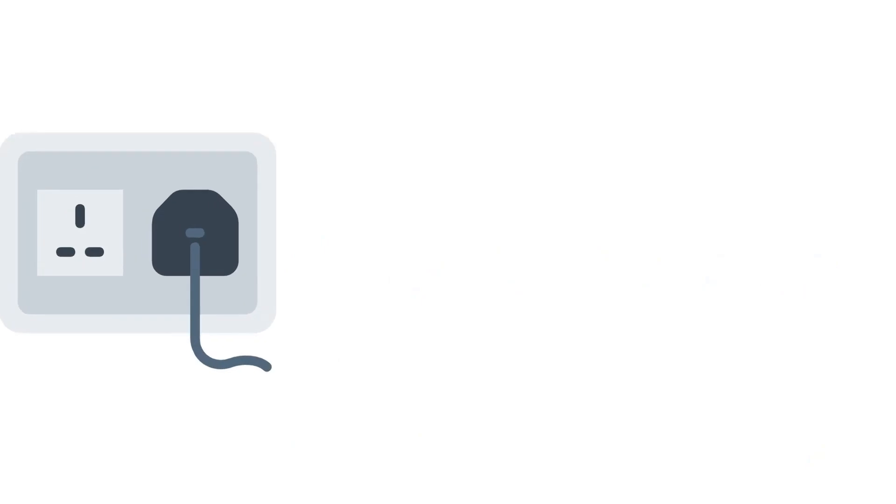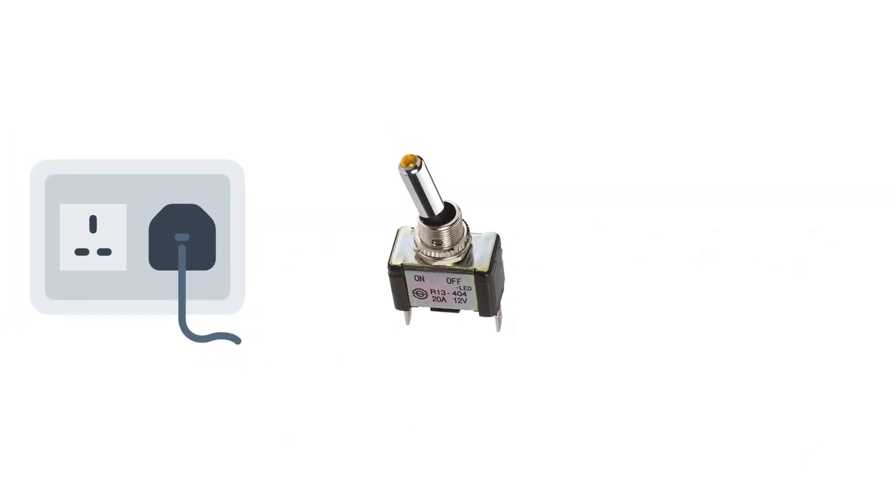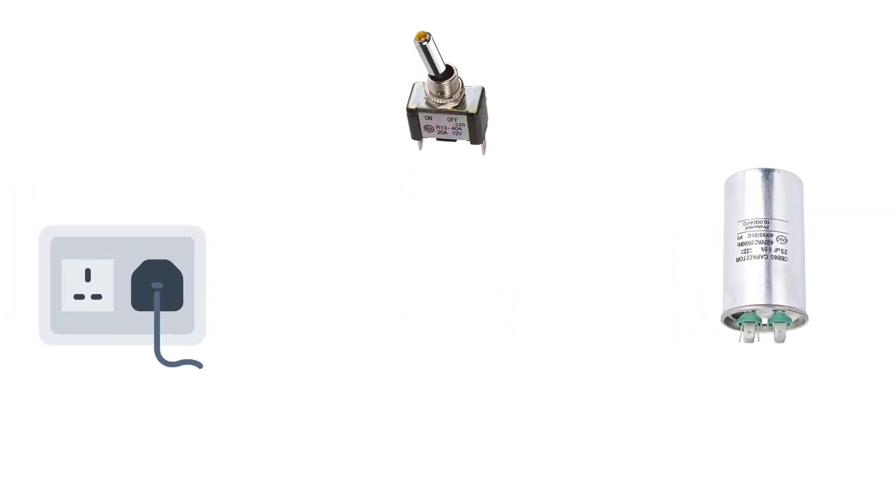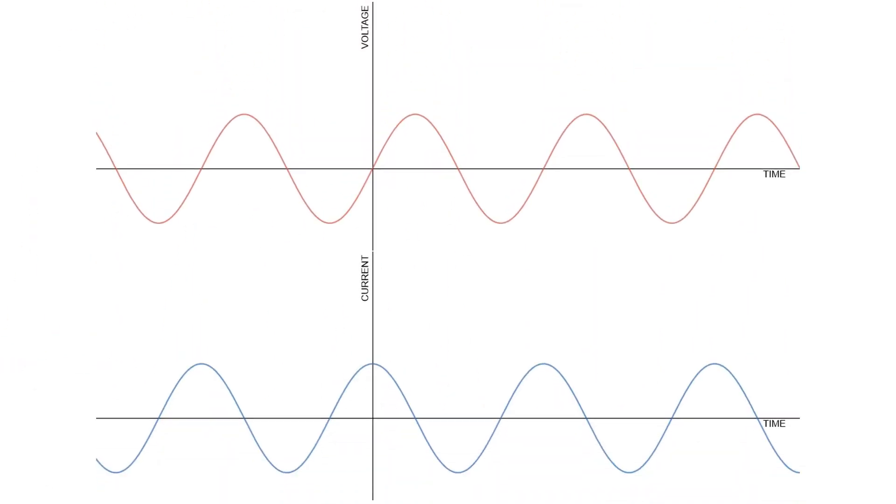Similarly, connect our AC source to a capacitive load. The current will be shifted by 90 degrees in the opposite way, or current will lead voltage by 90 degrees.